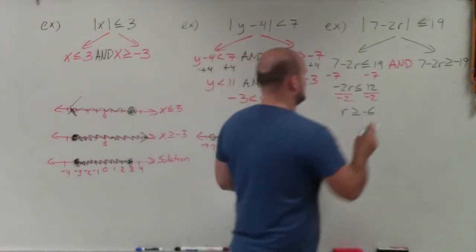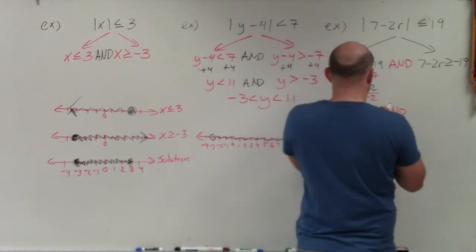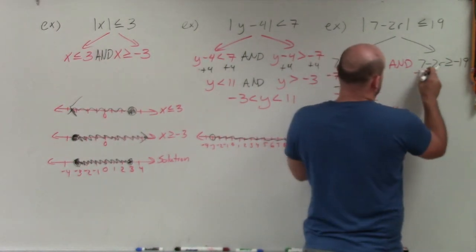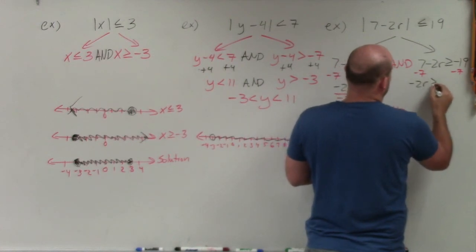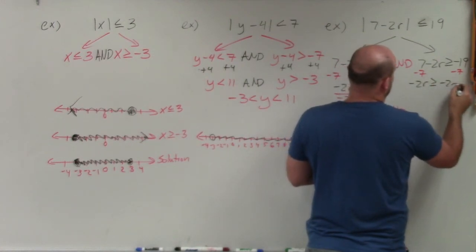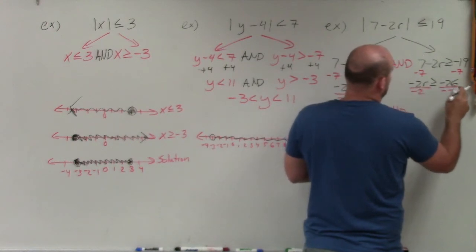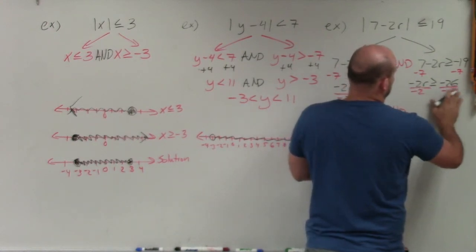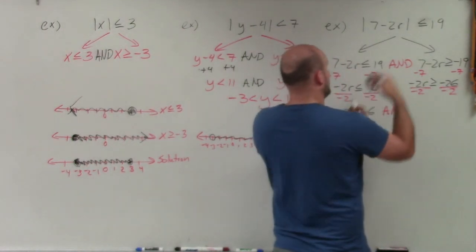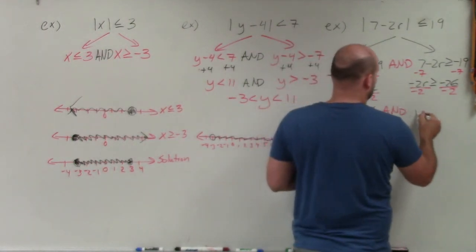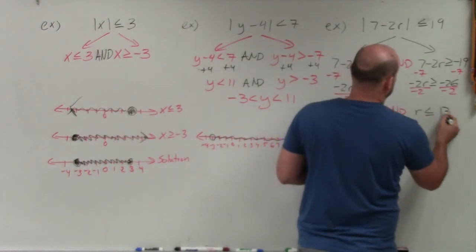That's connected with 'and.' For the second inequality, subtract 7 from both sides, giving negative 2R is greater than or equal to negative 26. Divide by negative 2 on both sides — again, since we're dividing by negative 2, we have to flip the sign — and we're left with R is less than or equal to positive 13.